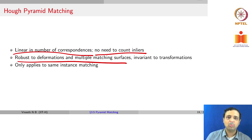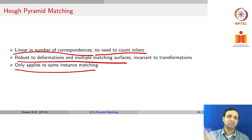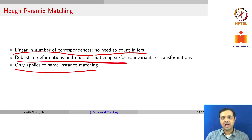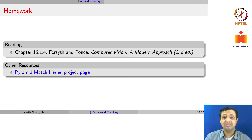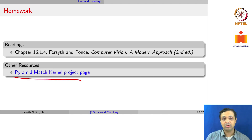The homework for this lecture is Chapter 16.1.4 in Forsyth and Ponce's book. The pyramid match kernel also has a nice project page with results, code, and a link to the paper for those interested in knowing more about these methods.